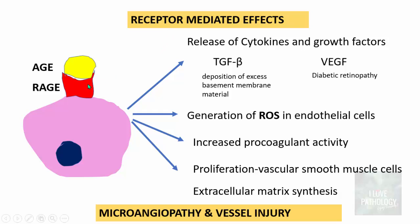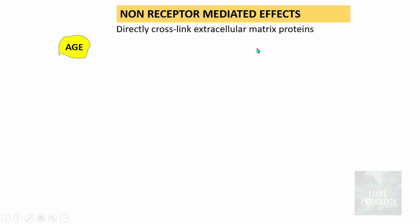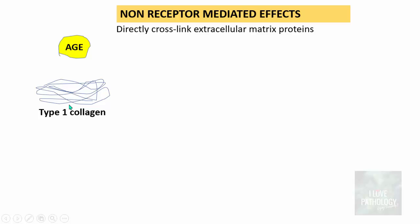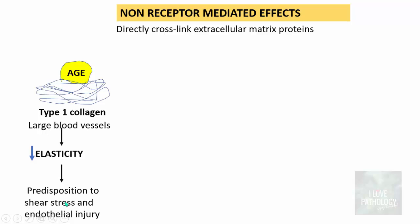AGEs can also act without receptors — these are non-receptor mediated effects. AGEs directly cross-link extracellular matrix proteins without needing receptors. For example, AGEs cross-linking type 1 collagen, which is present in the walls of large blood vessels, results in decreased elasticity of the vessel. Once elasticity decreases, vessels are predisposed to shear stress and endothelial injury.